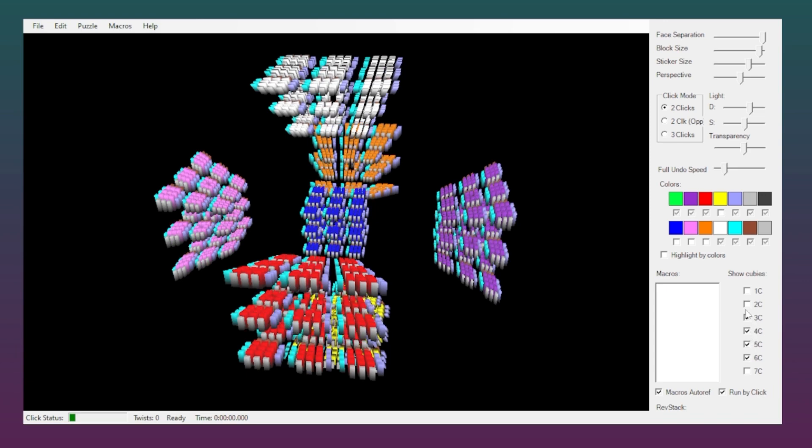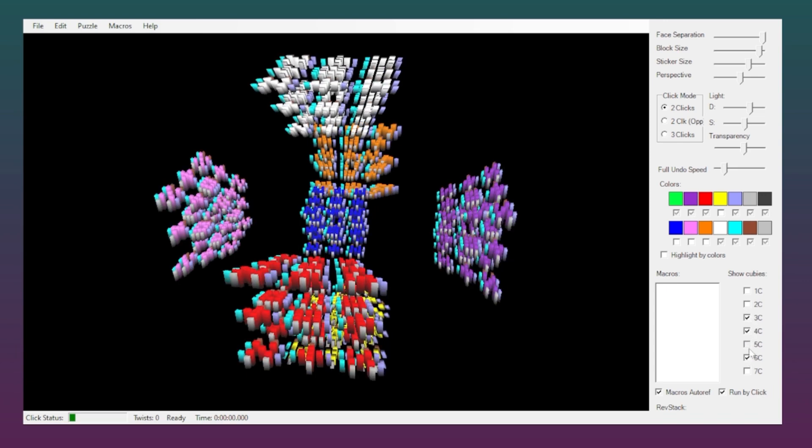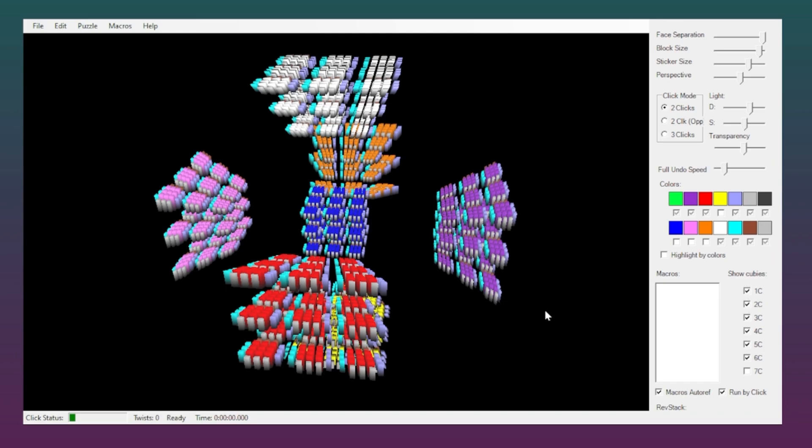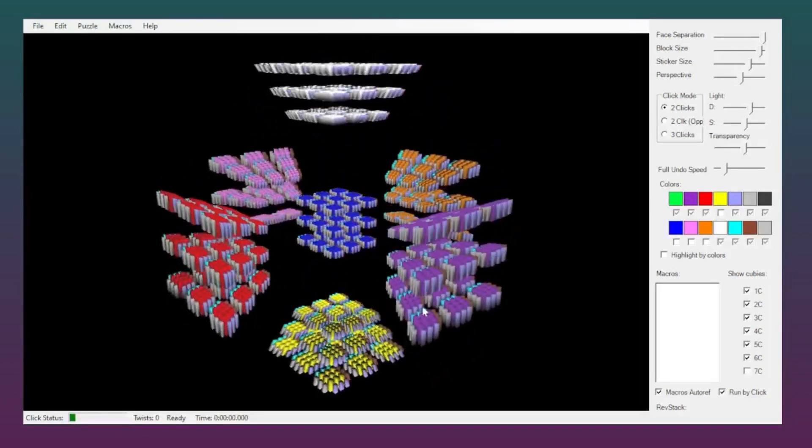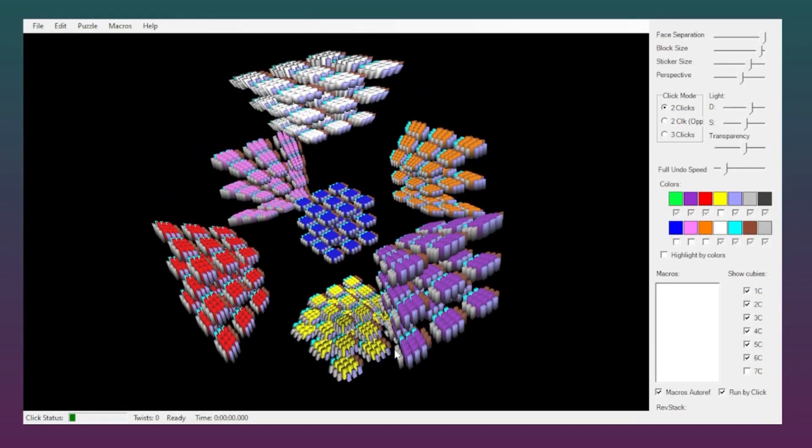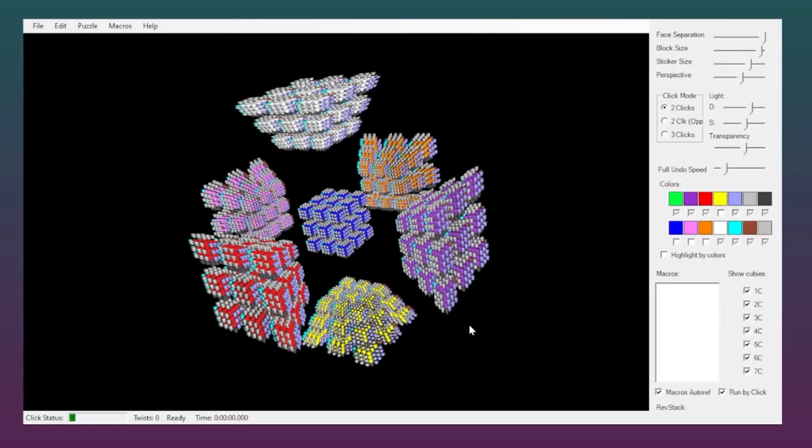This was made two years after MC5D was released in 2008 by Royce Nelson. This broke the record of having a 6D 3×3 and a 7D 3×3. Now let's not even go near 7D yet.